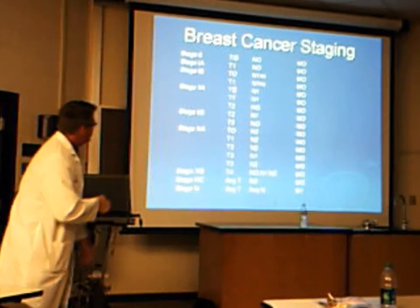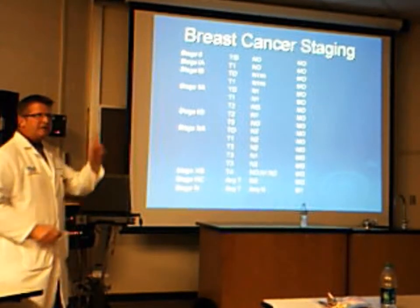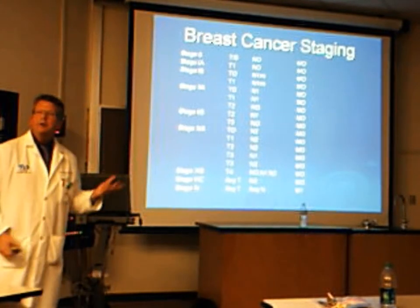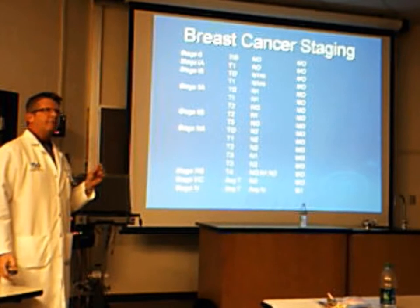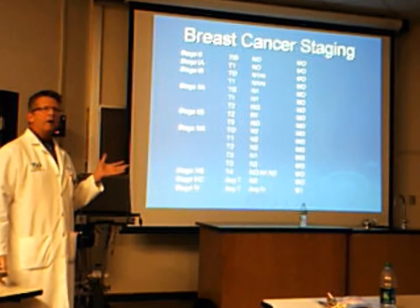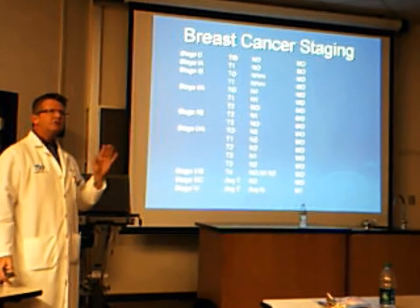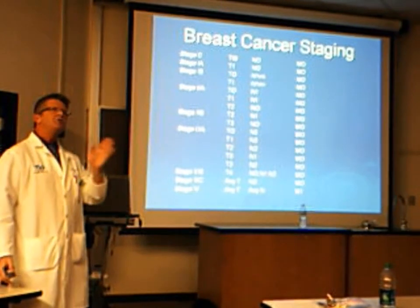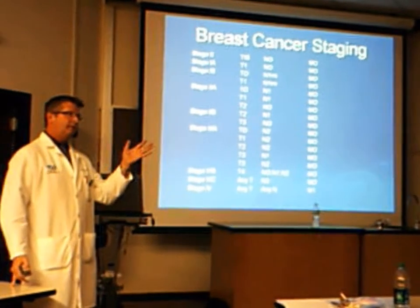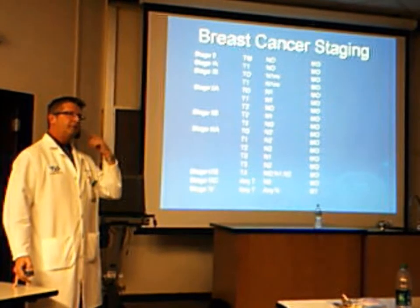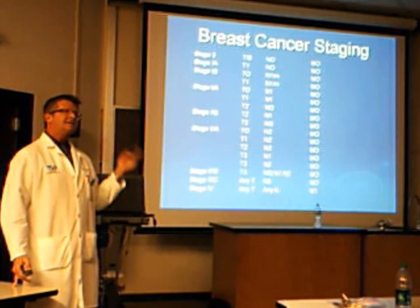The T is size. A T1 tumor is a breast cancer that is anywhere from 1 to 2 centimeters — it's under 2 centimeters. That's a T, and that's how I deduce the T.